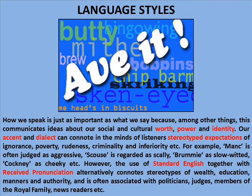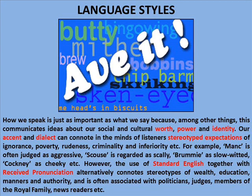Language styles. How we speak is just as important as what we say, because, among other things, this communicates ideas about our social and cultural worth, power and identity. Our accent and dialect can connote in the minds of listeners stereotyped expectations of ignorance, poverty, criminality and inferiority. For example, Mancunian is often judged as aggressive, Scouse is regarded as scally, Brummie as slow-witted, Cockney as cheeky. However, the use of standard English together with received pronunciation alternatively connotes stereotypes of wealth, education, manners and authority, and is often associated with politicians, judges, members of the royal family, newsreaders, etc.